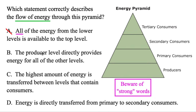The next option: the producer level directly provides energy for all the other levels. Once again, we've got that word 'all.' The producers only provide energy to the primary consumers — they don't directly provide to any of the other ones. So B is not true.